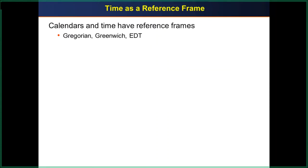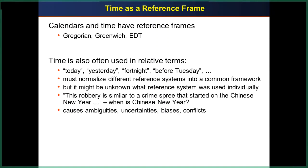There could also be a reference frame. There are calendars and time — like the Gregorian calendar, Greenwich time, and Eastern Daylight Time — and these are all reference frames. But they're often used in relative terms, like today, yesterday, or a fortnight before Tuesday. For example, yesterday depends on the time zone. You have to normalize that into a common framework, like Greenwich time.